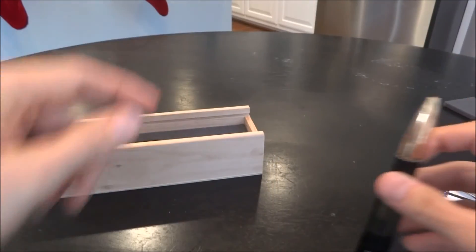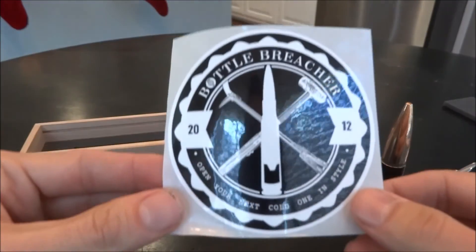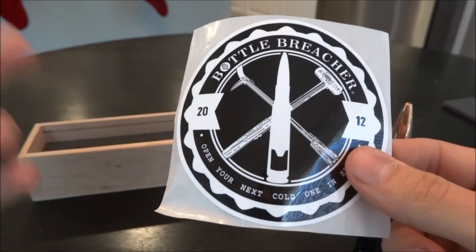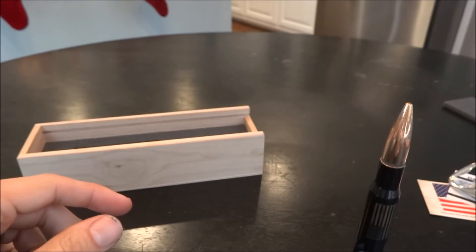Alright guys, something else that comes in the package. The bottle breacher gives you one of their stickers. You can put it on your car, you can put it on your gun cabinet, whatever you have. So there's that right there.